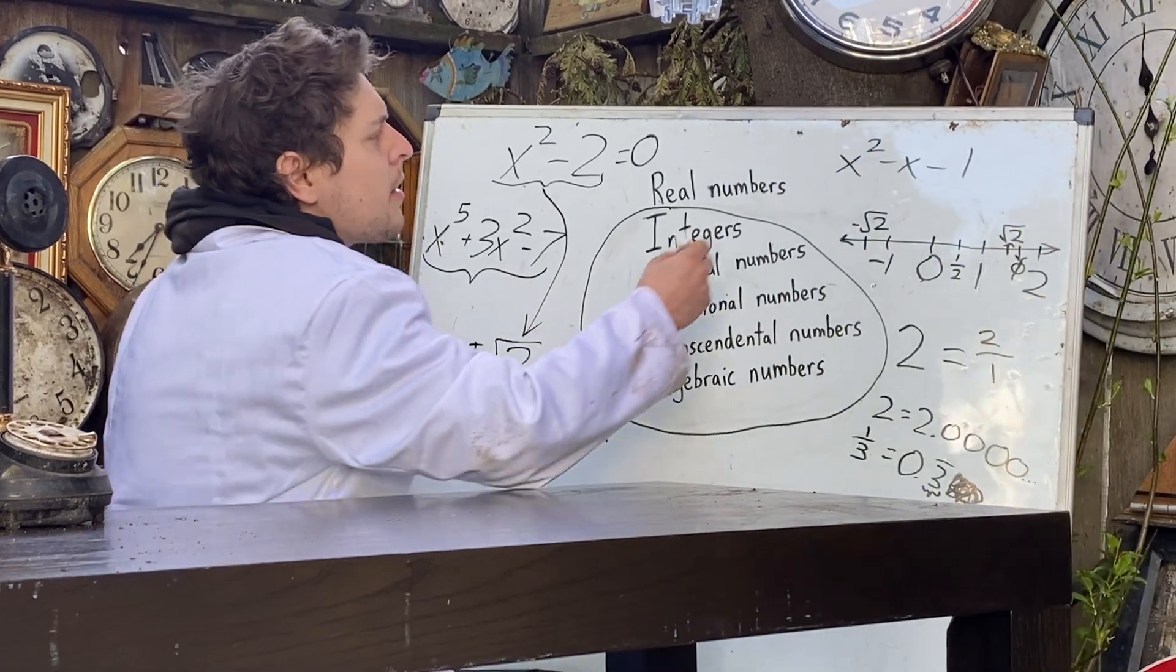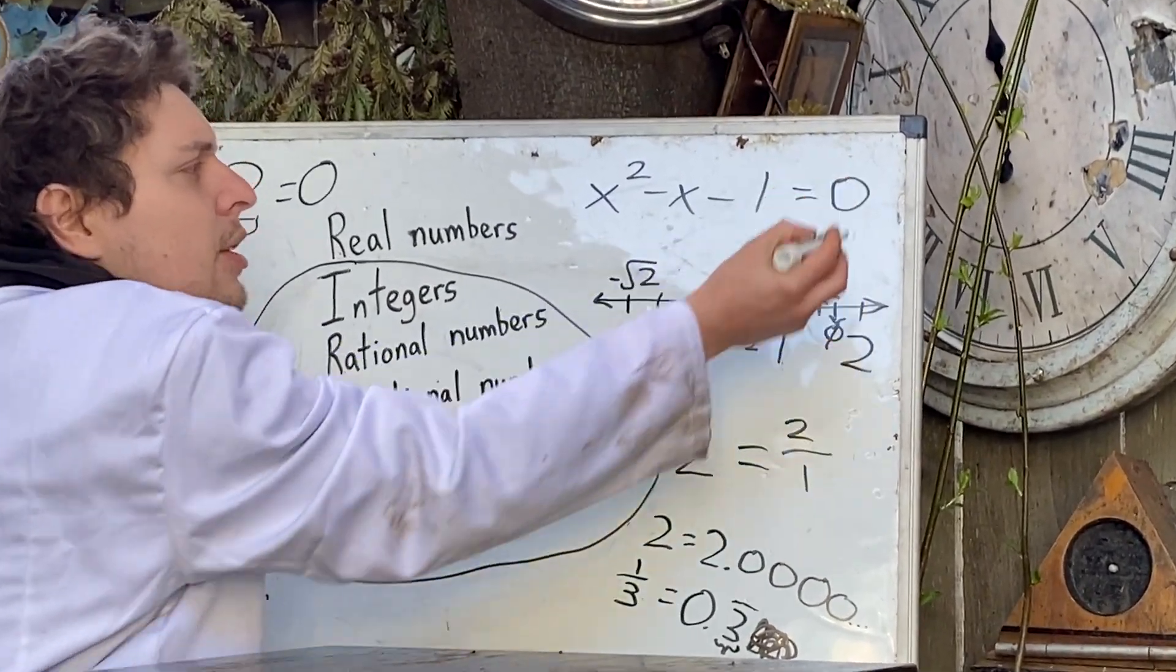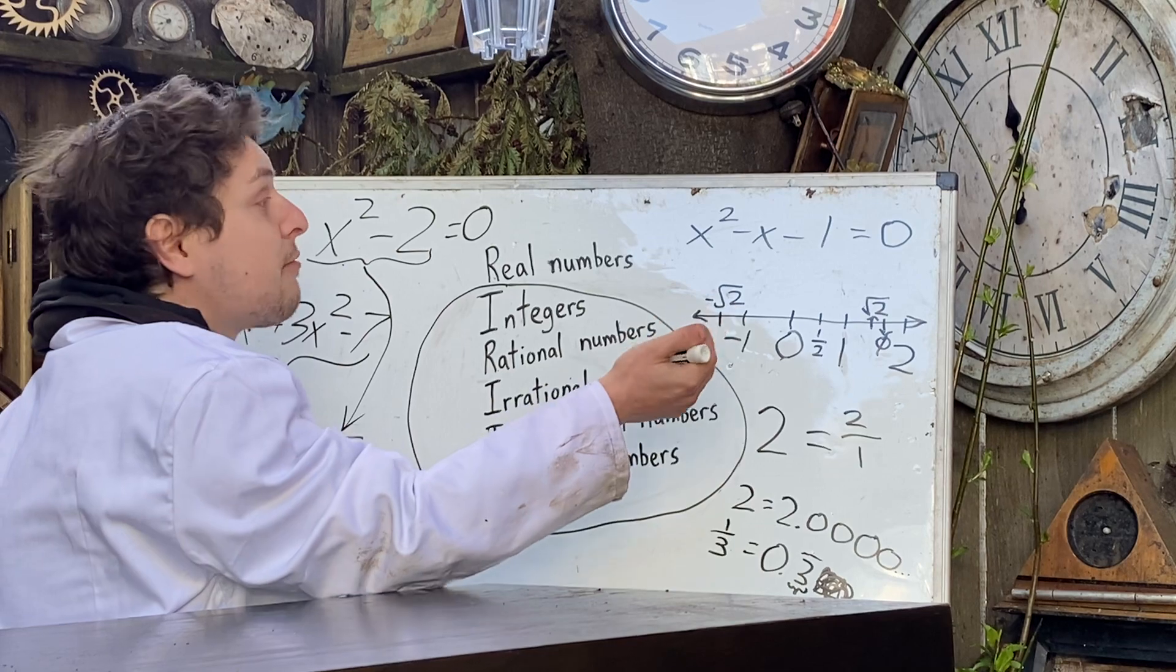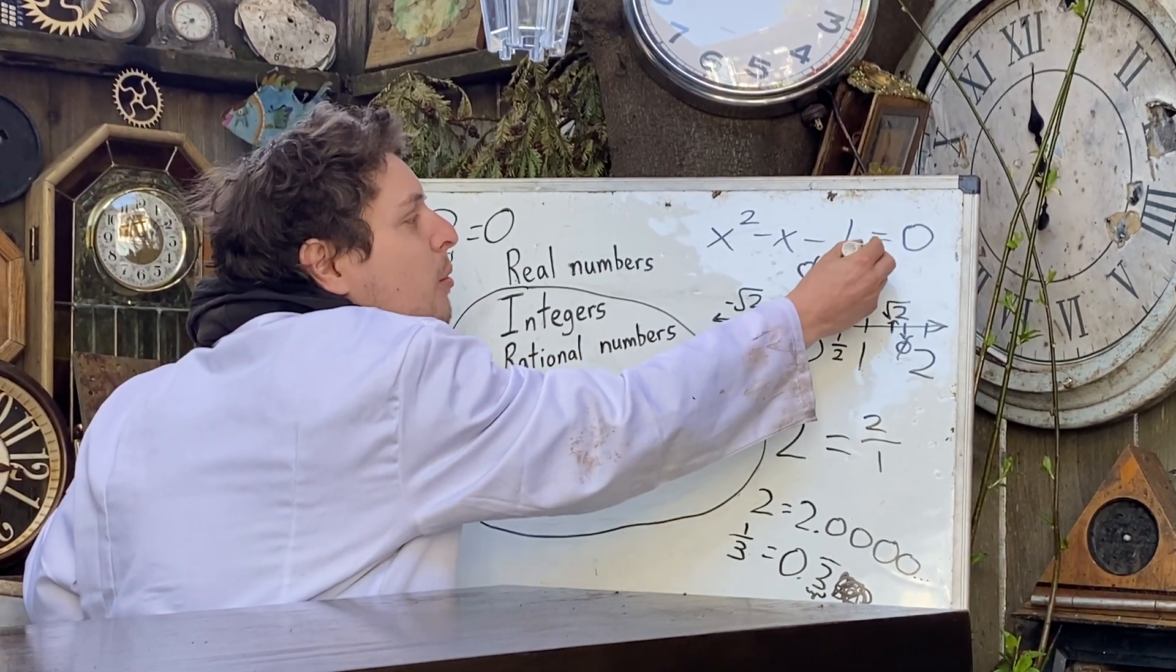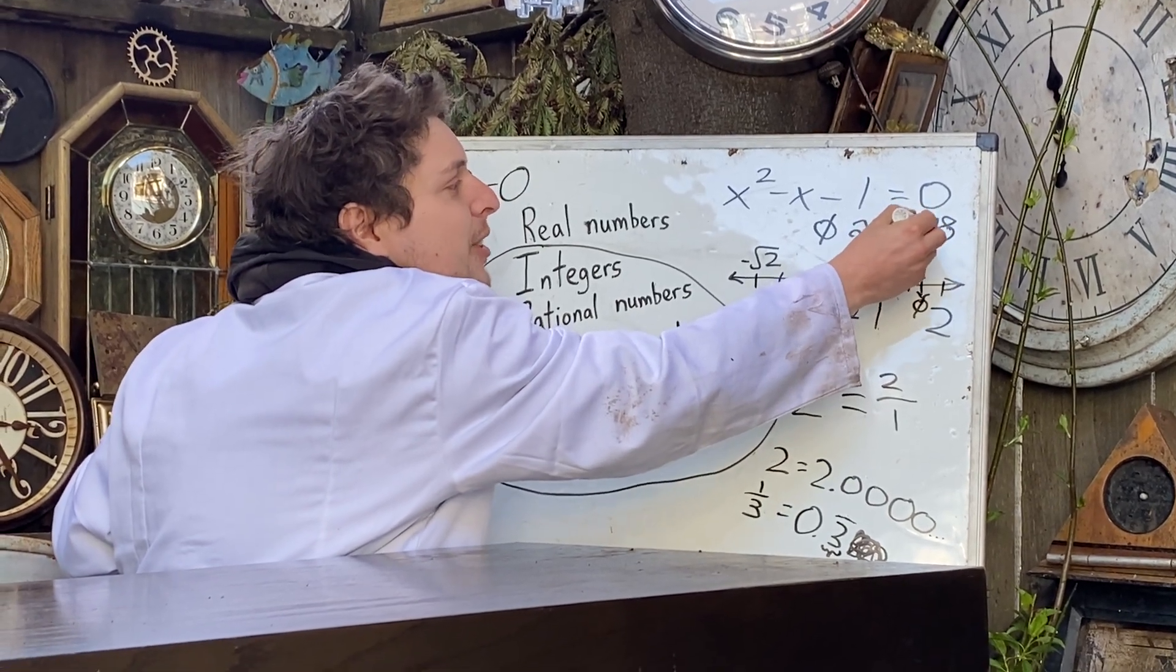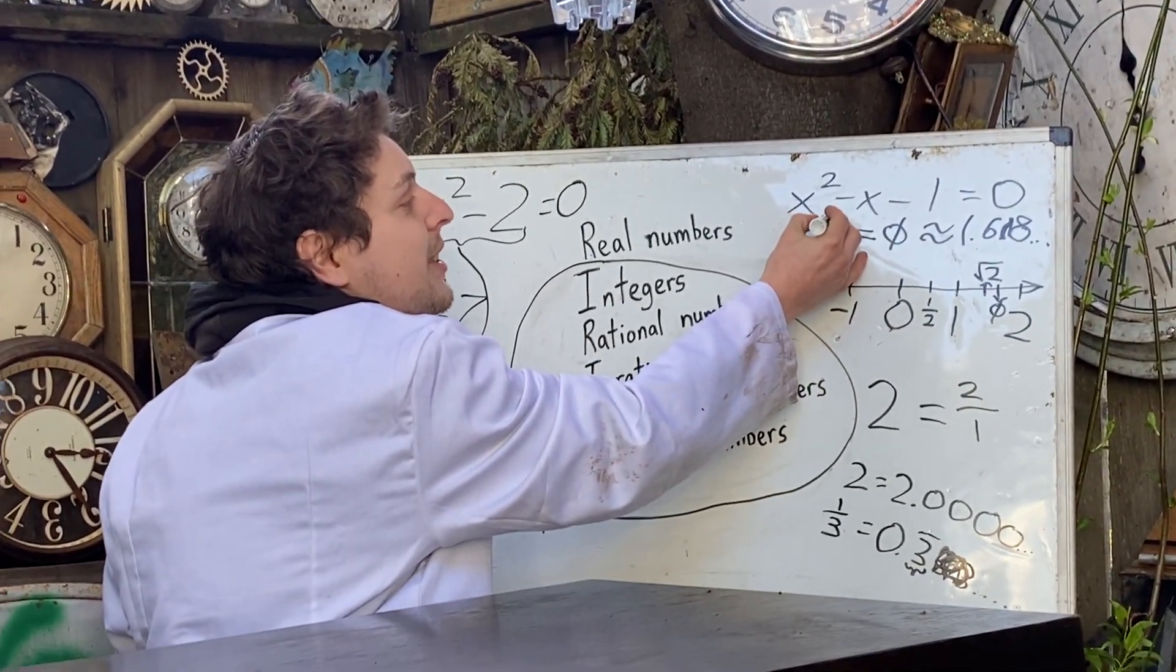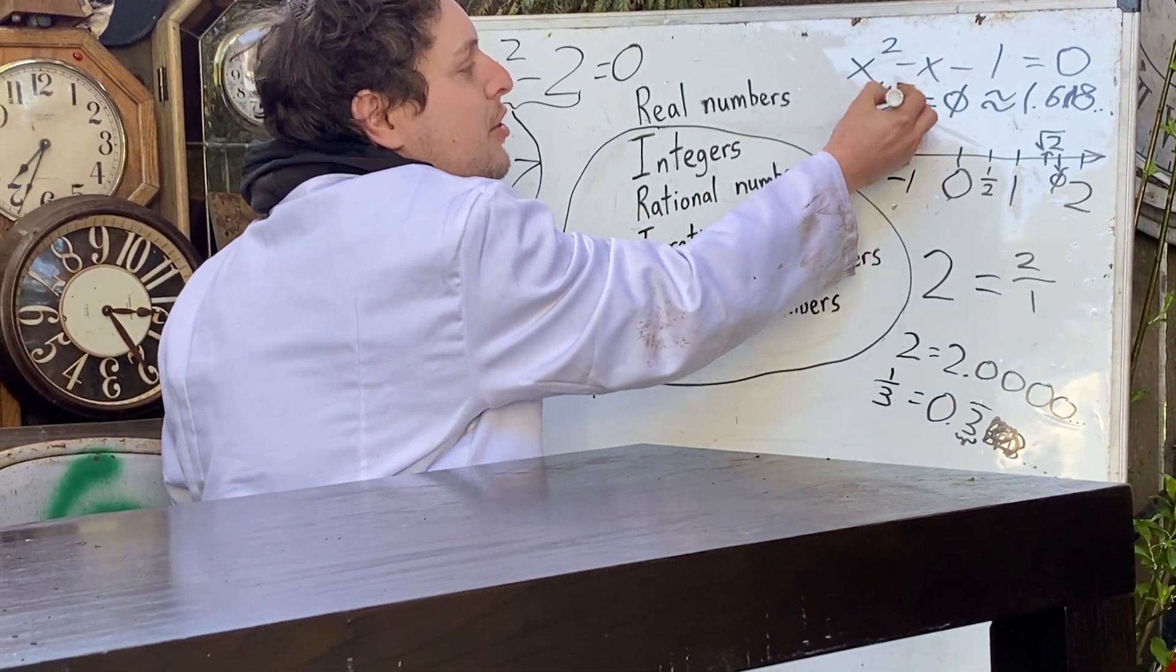Similarly, this right here, x squared minus x minus 1, if I set that to zero, the roots of that are going to include the more popular of the two roots is the golden ratio, which is about 1.618, but it's going to have one of those infinite non-repeating decimals. So a clearer way to say what it is, is the golden ratio is 1 plus the square root of 5 all over 2.